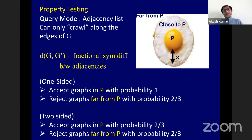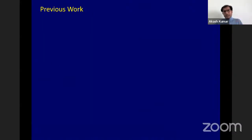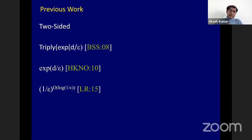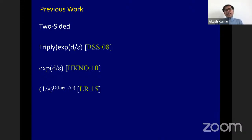In terms of previous work: in 2008, Benjamini, Schramm, and Shapira presented an algorithm solving the two-sided variant in time triply exponential in d over epsilon, with no dependence on n — remarkable but with terrible epsilon dependence. They conjectured the problem could be solved with running time polynomial in d over epsilon. This was improved by Hassidim, Kelner, Nguyen, and Onak in 2010 to singly exponential, and further by Levi and Ron in 2015 to quasi-polynomial in 1 over epsilon.